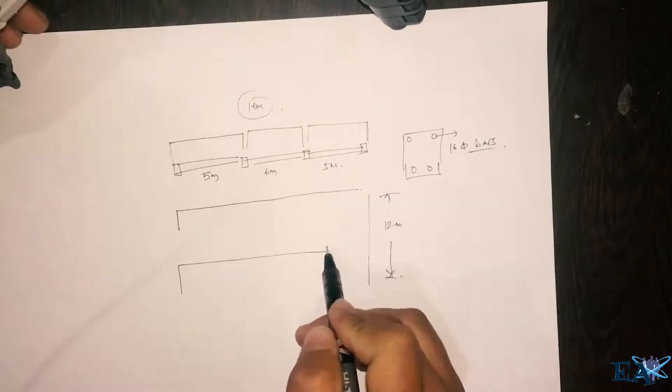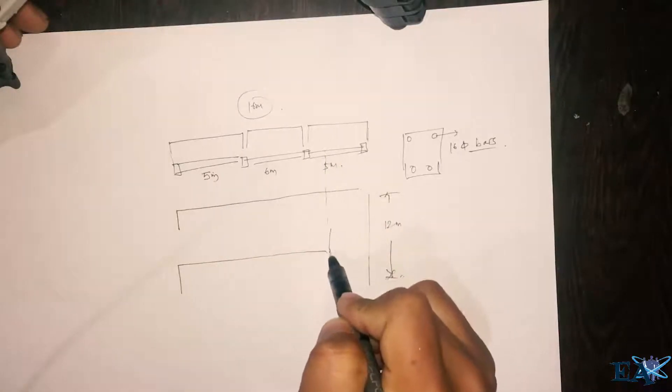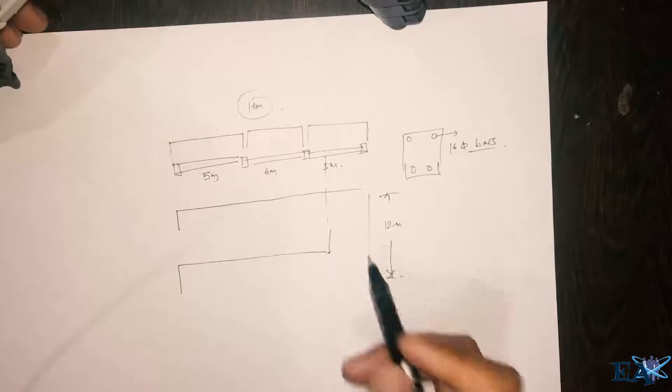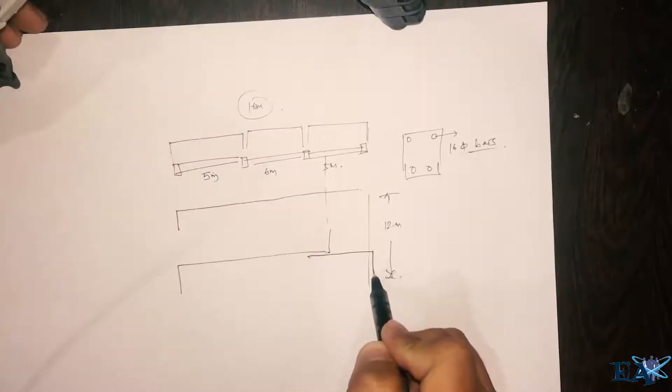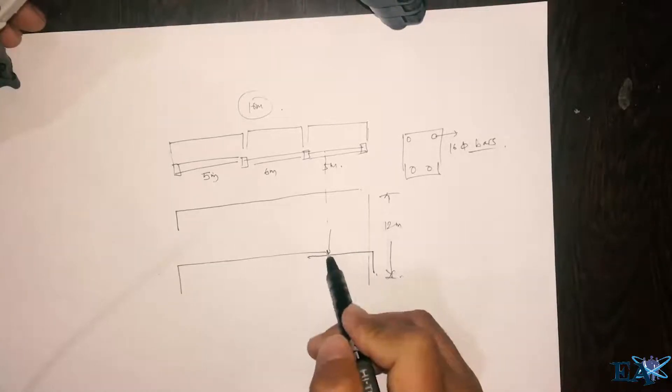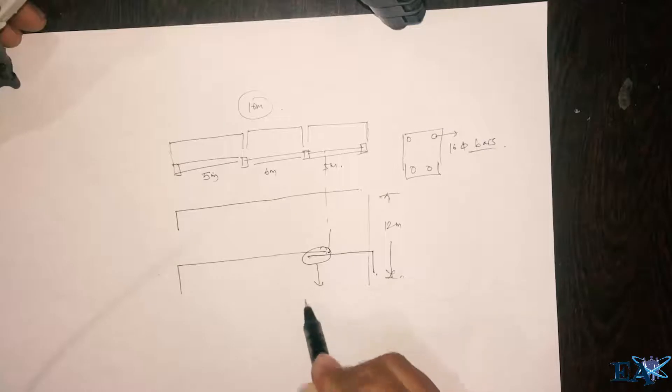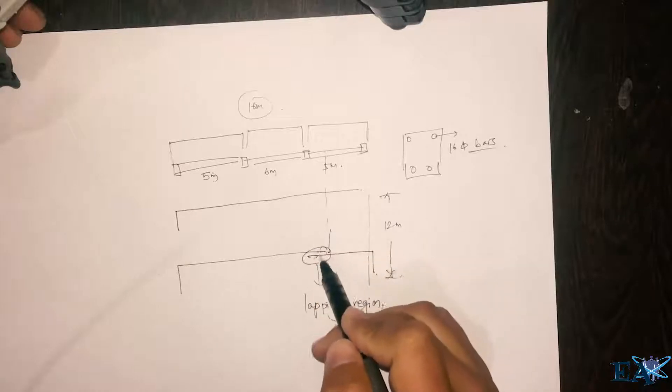So I use 6 plus 5, 11, so you reach somewhere here. After that what you do, you take another bar and lap here and you just go into the other column as a development length. So this region is known as lapping region. So this bonding between these two bars is known as the lap.